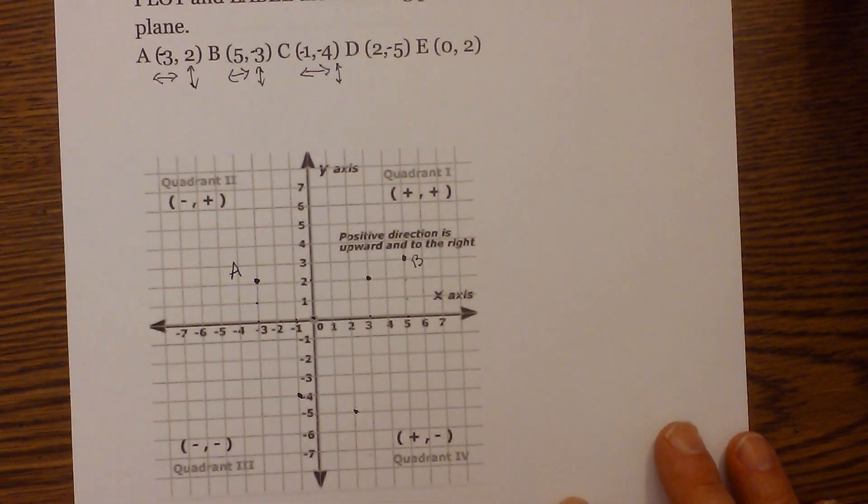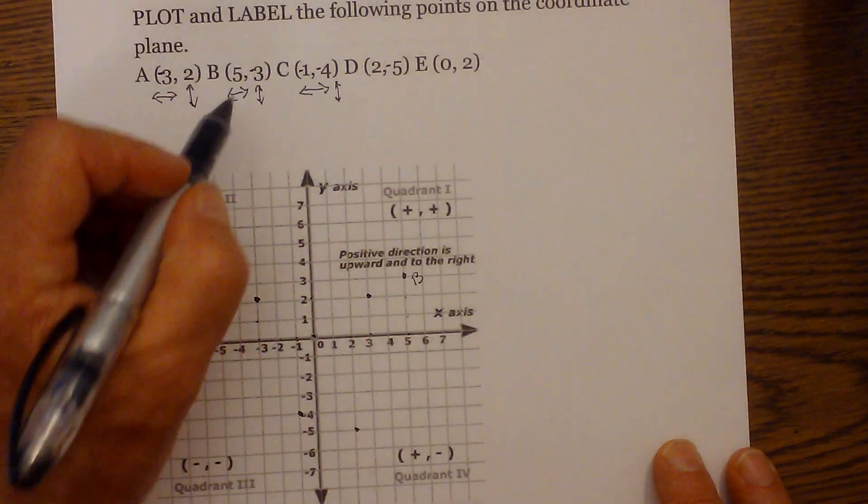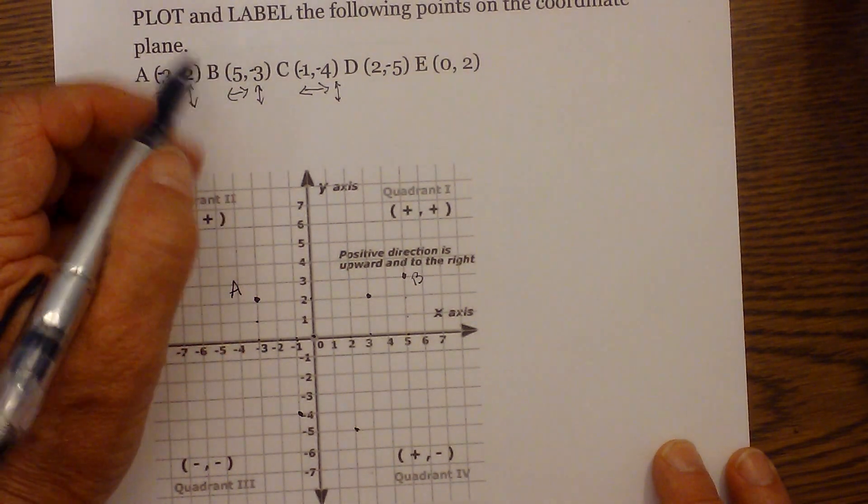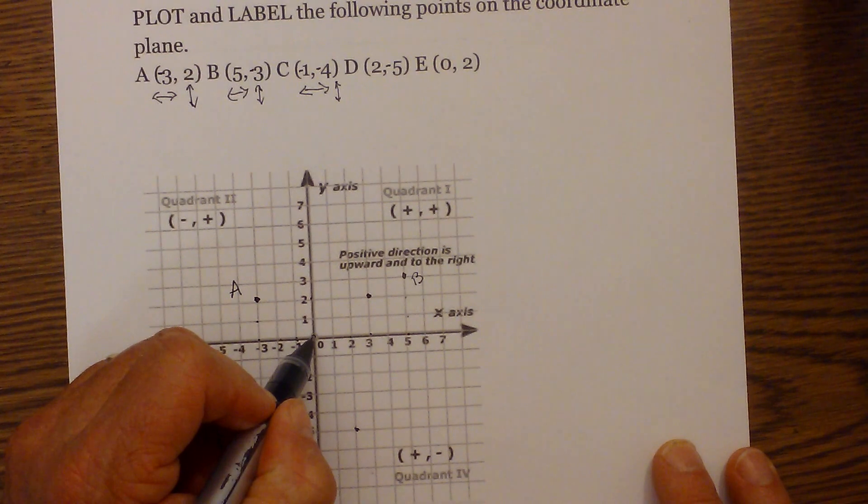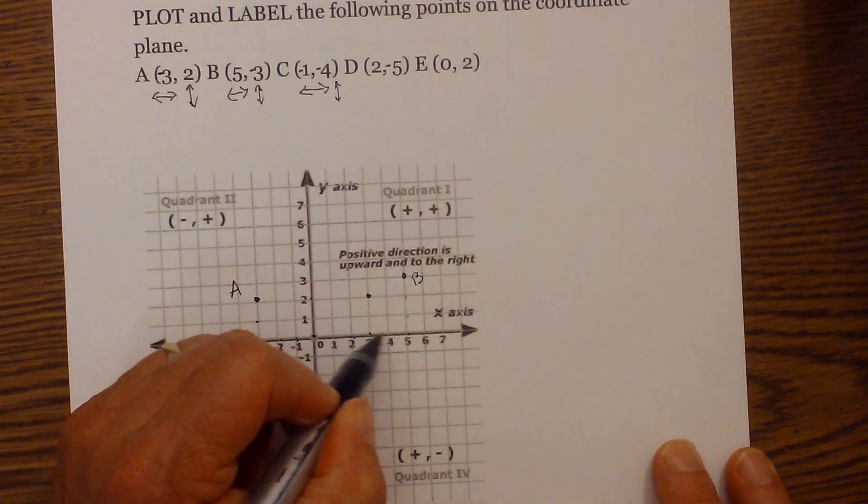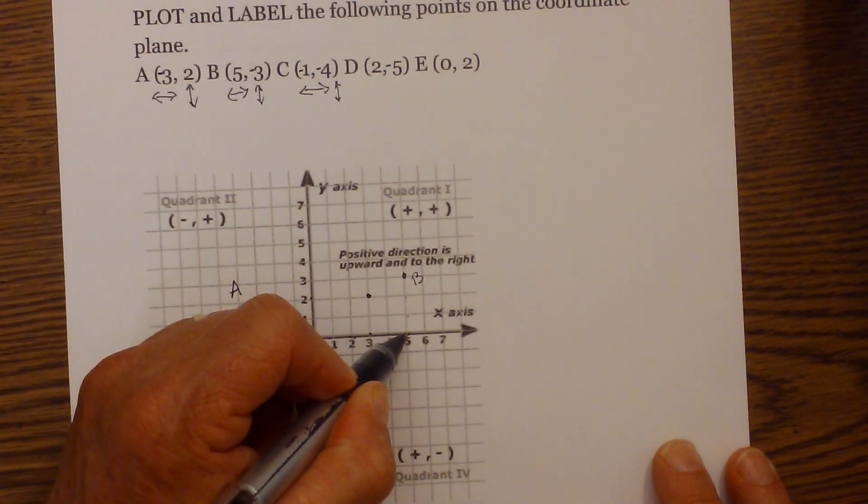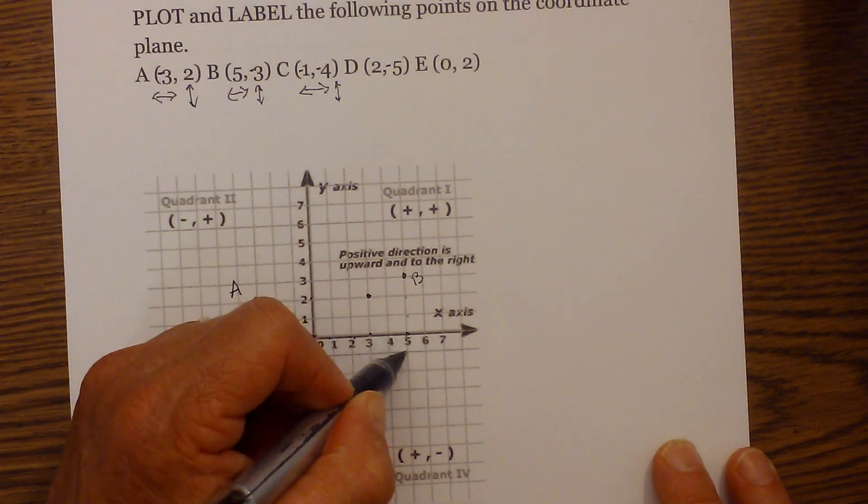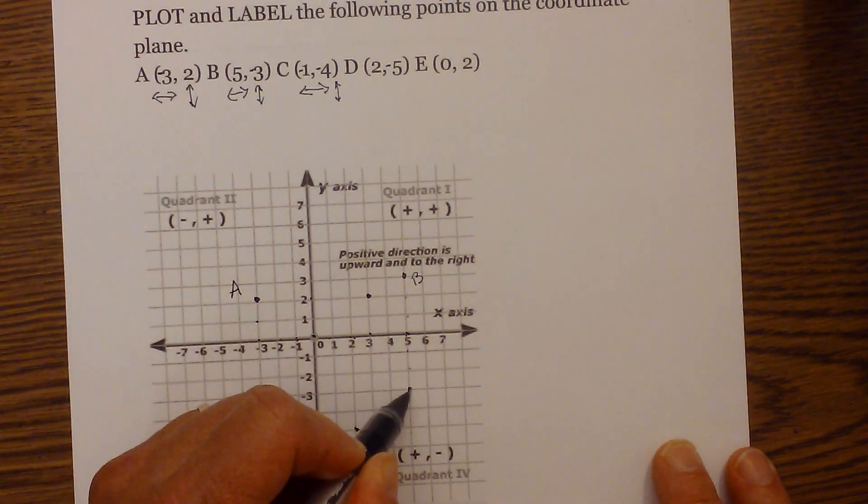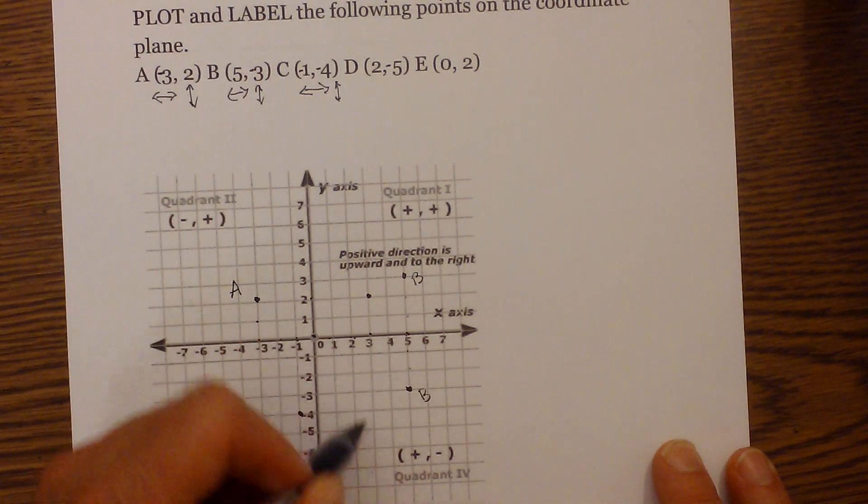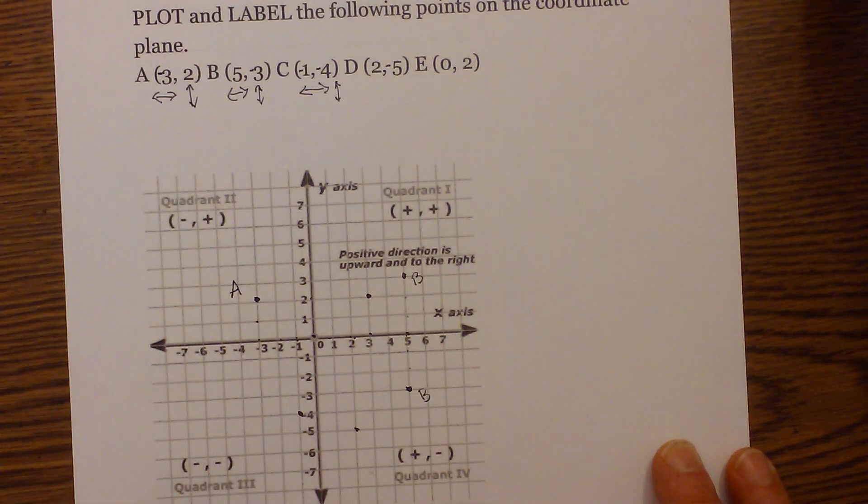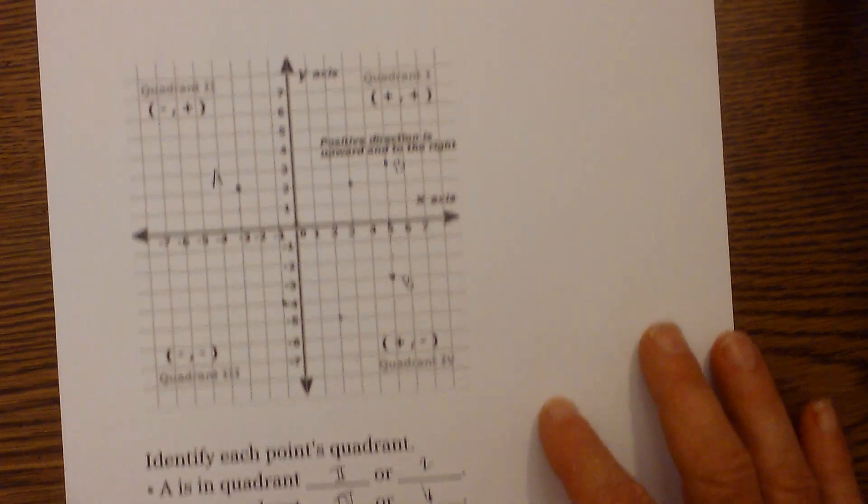Next we have five, negative three. Start at zero zero, one, two, three, four, five, but then we're going to go down negative three, one, two, three. So B would be here and it is in quadrant four.